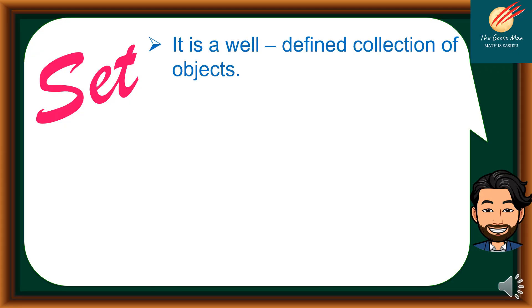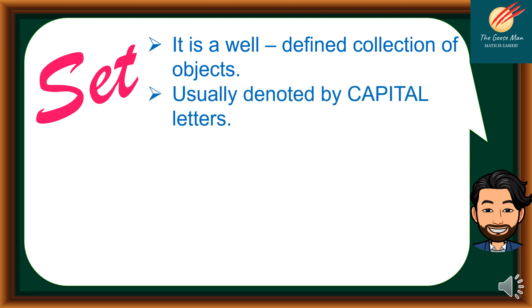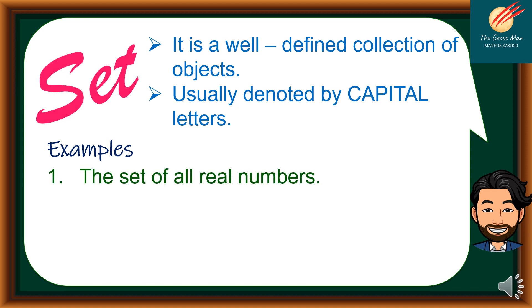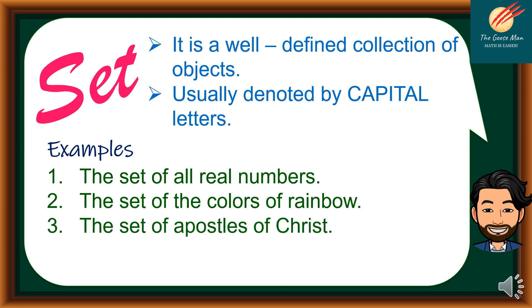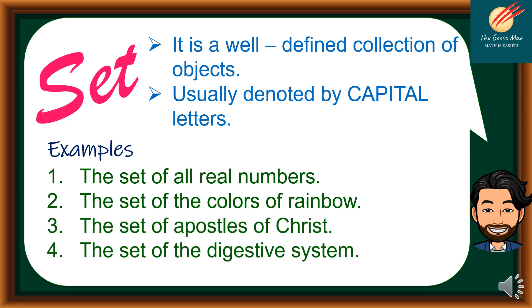A set is a well-defined collection of objects, and usually denoted by capital letters. For instance: the set of all real numbers, the set of the colors of the rainbow, the set of a puzzle of rice, and the set of the digestive system.